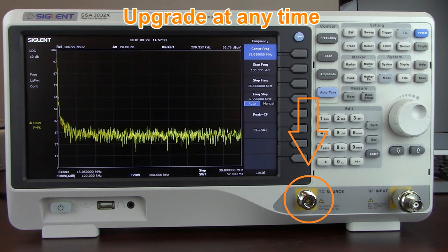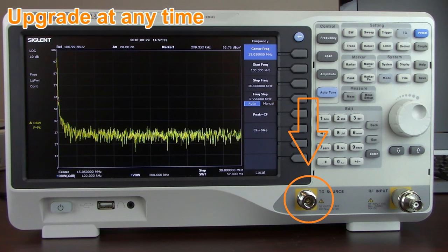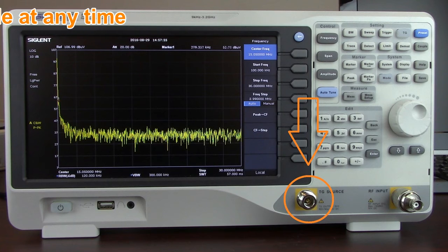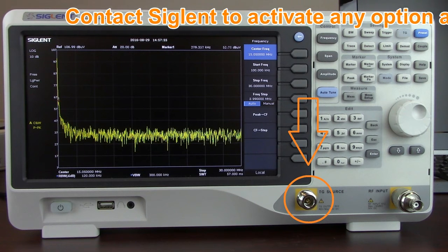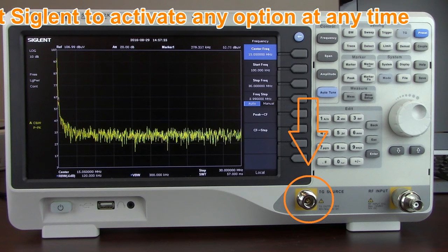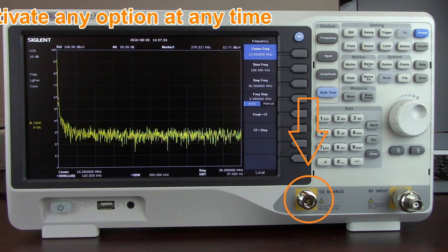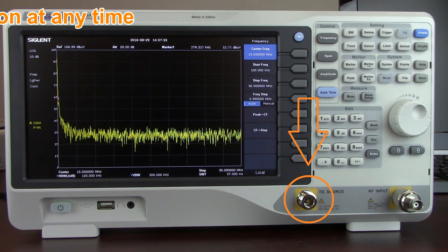Unlike many analyzers, the TG also operates to the maximum frequency of the instrument, not just to 1 GHz. So if you have a 2.1 GHz unit, the tracking generator operates up to 2.1 GHz. That makes the TG option even more powerful, giving you full bandwidth capability or full frequency span capability to test your passive and active devices.